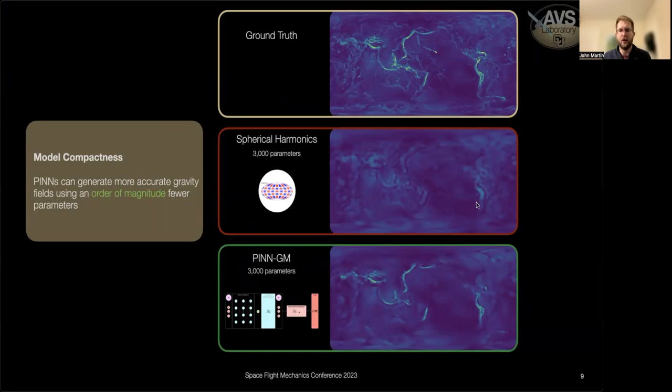And really, you can see that there's no competition between these two gravity models. The PINN gravity model immediately recognizes the most important parts of the problem and models accordingly. Whereas spherical harmonics still doesn't quite know what's going on. It just needs more harmonics to be able to capture those features.